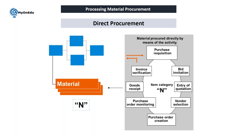Direct procurement is the process where we are directly procuring material for our project. The steps are: create a project, create a purchase requisition, bid invitation, vendor selection, purchase order, purchase order monitoring, goods receipt, and invoice verification. The purchase requisition can be created from the project builder in CJ20N. Bid invitation, quotation entry, vendor selection, purchase order, and goods receipt are all managed in the Material Management module.